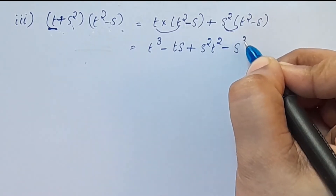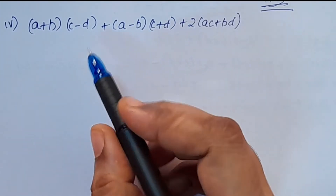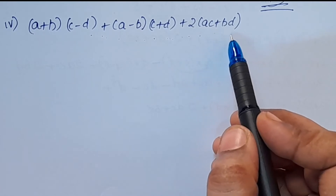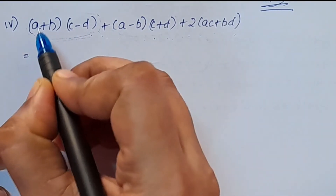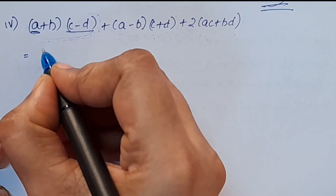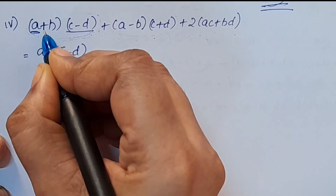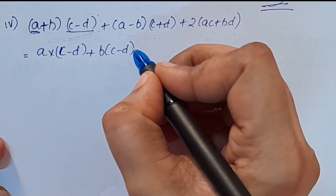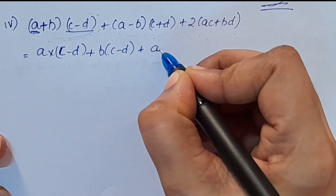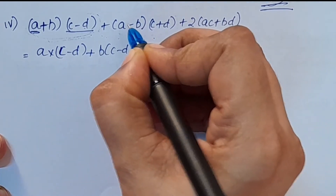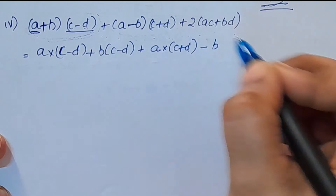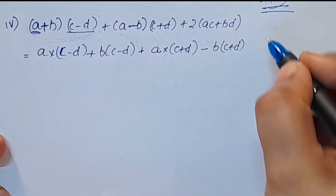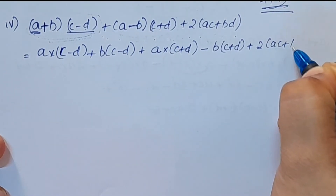Fourth question: (a + b)(c - d) + (a - b)(c + d) + 2(ac + bd). Now we will multiply: a(c - d) + b(c - d), then a(c + d) + b(c + d), multiply (a + b)(c + d), plus 2ac + bd.